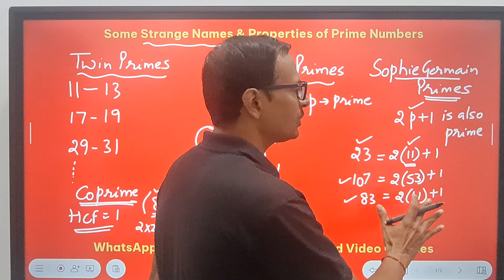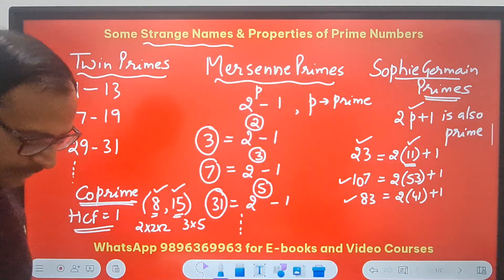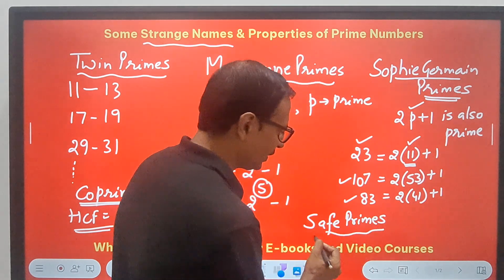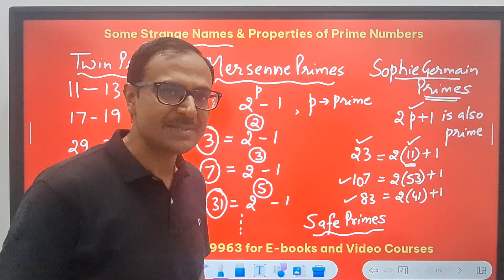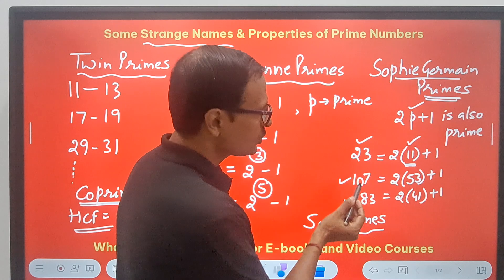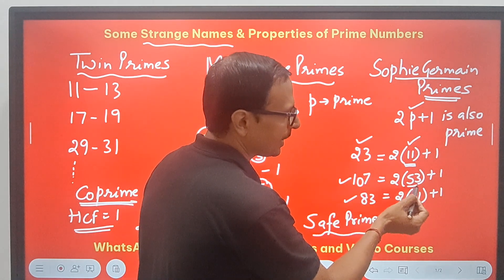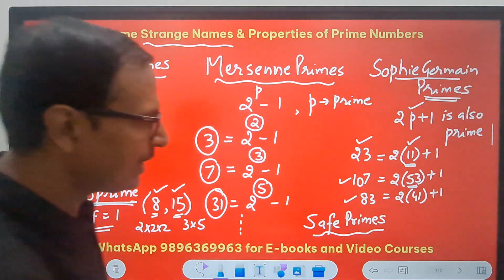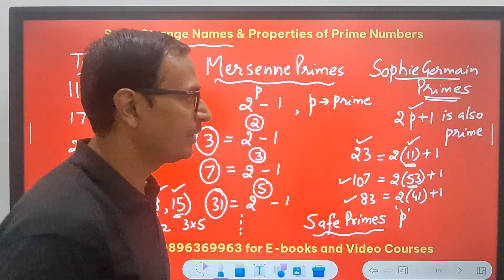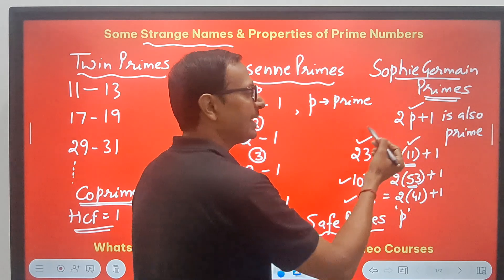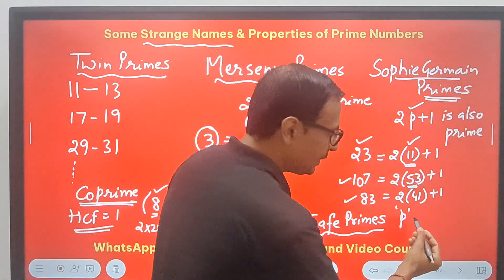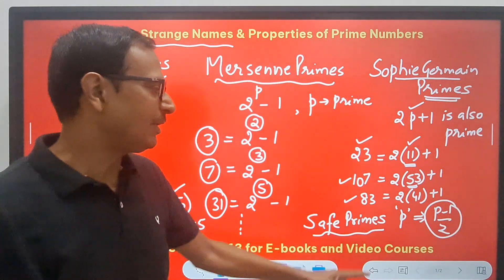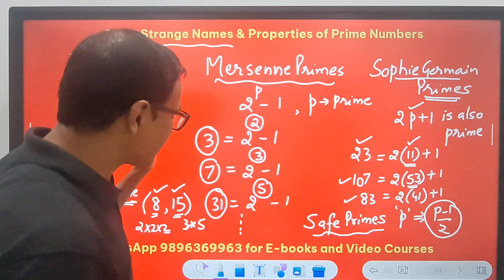Very much related to this concept is the concept of safe primes. Safe primes are defined in relation to Sophie Germain primes. A prime number p is called a safe prime if (p − 1) / 2 is also prime. So on one side you have the Sophie Germain prime, and on the other side you have the safe prime.